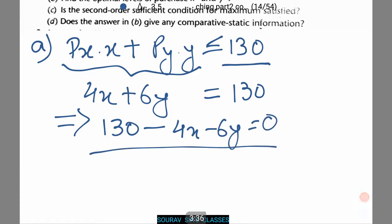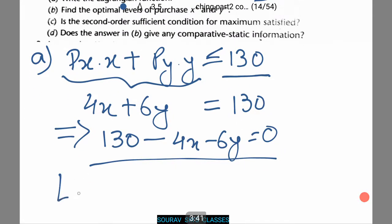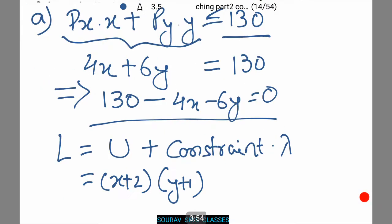This represents the budget constraint that a person has. Now the Lagrangian function will be the utility function plus the resource constraint multiplied with lambda. Let's see what it comes to. The utility function is given as x plus 2 times y plus 1. So we'll just multiply lambda with this resource constraint, that is 130 minus 4x minus 6y. Thus this is the Lagrangian function that is required in the question.